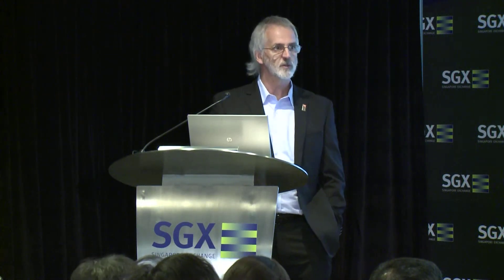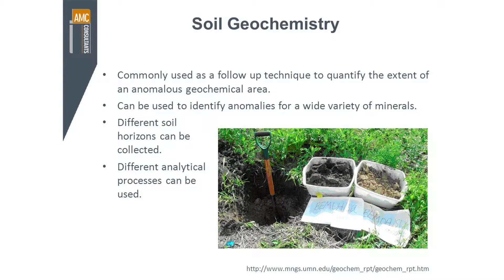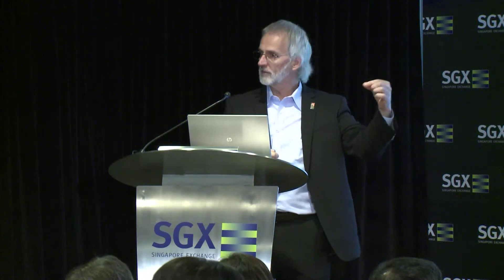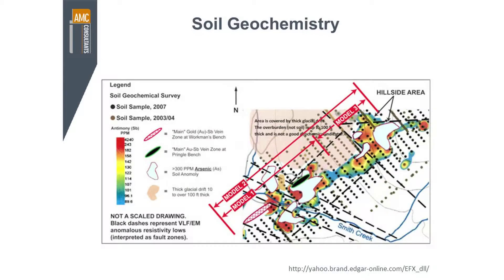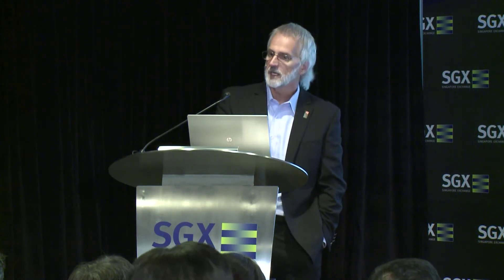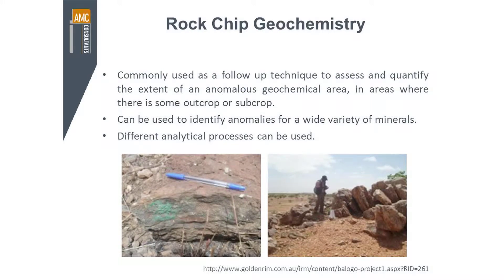We also do lots of soil geochemistry — collecting samples from small pits and sending them to the laboratory, analysed for generally lots of different elements. Sometimes you're looking for a gold anomaly in the soil, but often you're looking for pathfinder elements — elements accompanying the gold, such as arsenic, copper, or various other elements, where you have more chance of finding higher levels. You'll be generating maps and plans, looking for elevations of various elements that you can then go and test in more detail. In places where you do have rocks on the surface, you can also collect rock chip samples and send them to laboratories for analysis.